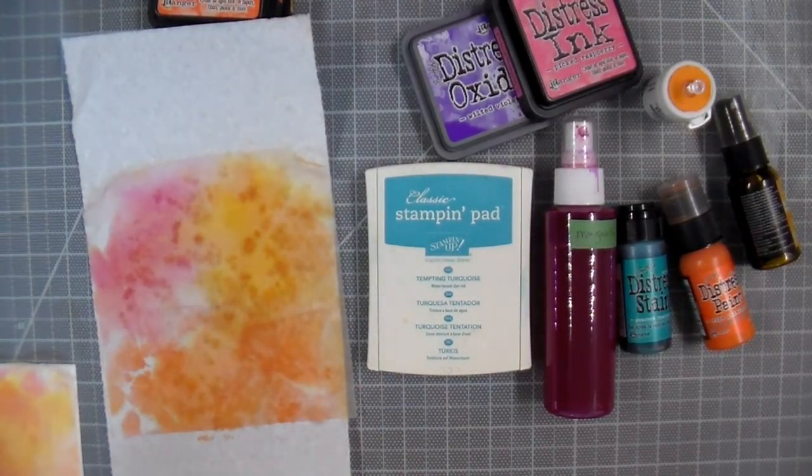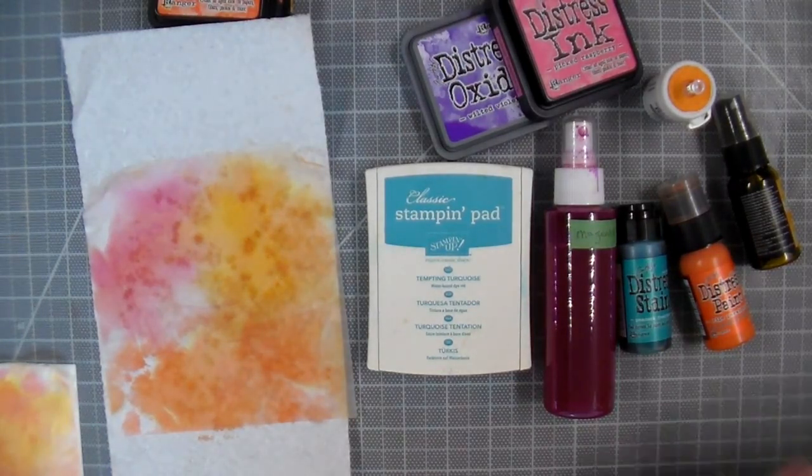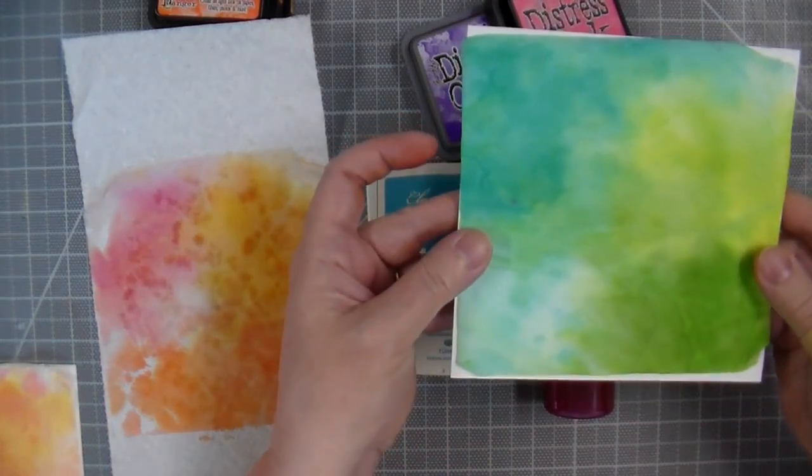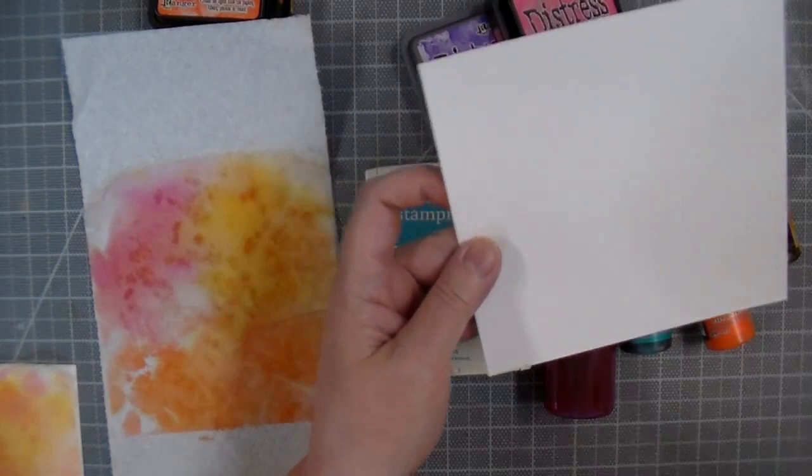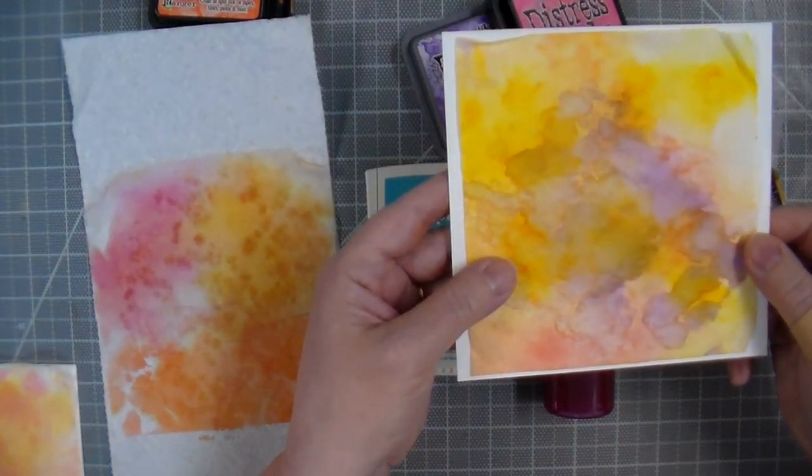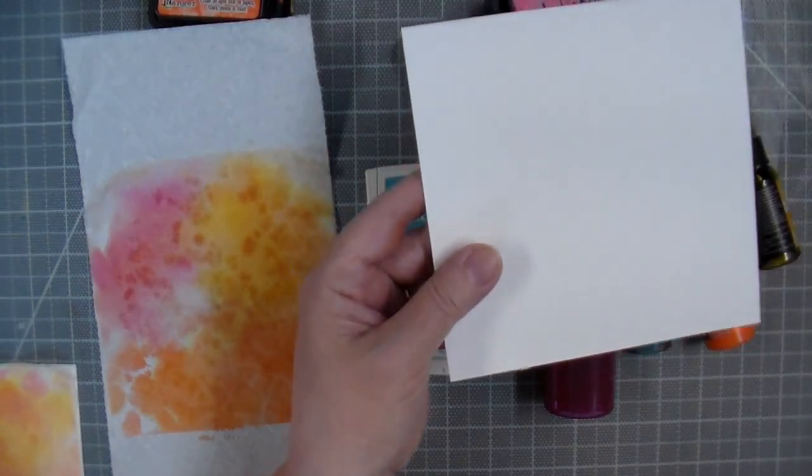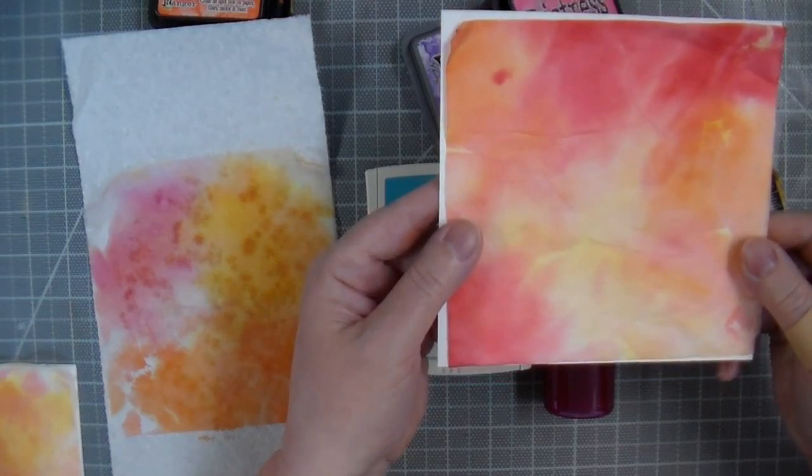I'll show you some of the different finishes depending on the medium I've used. This one is done with watercolor sprays, and you can see that the colors are very intense with just one layer. This is a mix of distress inks and distress oxide inks. This is dye inks from Stampin' Up, but any dye inks would work.